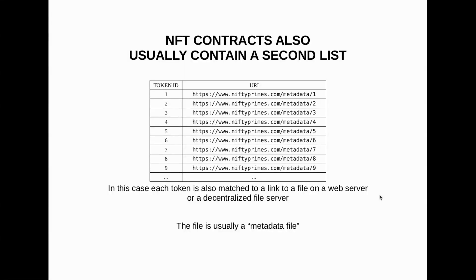Now if it was just a two-field row in a spreadsheet, NFTs would be pretty dull. But what smart contract programmers do is generally implement a number of other lists, and the most common one is something called the URI list. So you have a second two-column list: the first column specifies the token ID and the second one specifies something called a URI for each of the NFTs. A URI is something like a web address or a location on a file server — it allows a computer to go and retrieve some data from somewhere else. In this case, you can see I've got an NFT with nine tokens, and each token has metadata associated with it. When a computer retrieves a particular NFT, what it's doing is looking at where it should go and get that metadata — so for token 3, the suggestion is to go and look at niftyprimes.com/metadata/3.